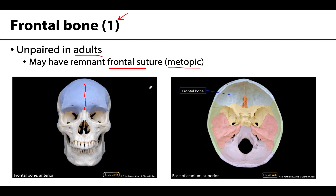You can also see the frontal bone when looking at the base of the cranium. This is a basacranium view — the calvaria has been removed and you're looking down into the cranium. We'll return to this view repeatedly when discussing the neurocranium. In the anterior view, the squamous portion of the frontal bone makes up the forehead region, and the frontal lobe of the cerebrum sits just behind it.